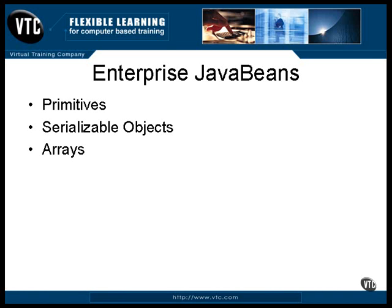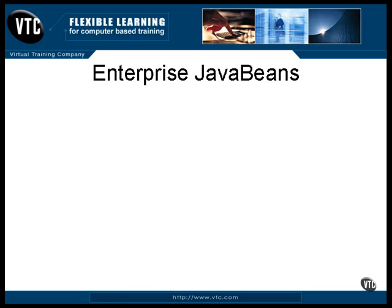You can send arrays as long as the members of the arrays all can be sent. Remote objects are addressed by stubs that reference them, so sending the stub is sort of like sending a gateway to the remote object — the object stays where it is and stays remote, and the access to it is sent. Those are the fundamentals of clients talking to beans. In the next movie, we'll be looking closer at the beans themselves.